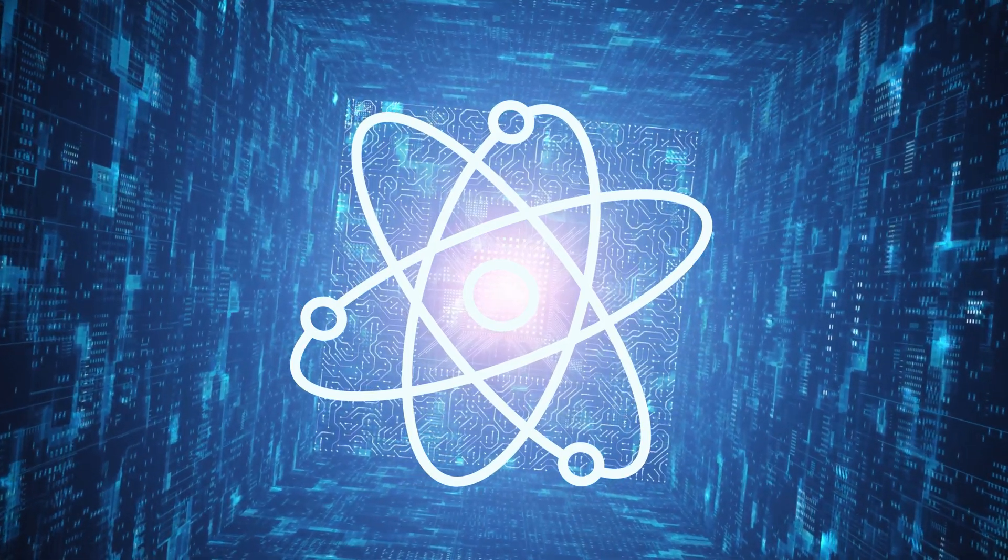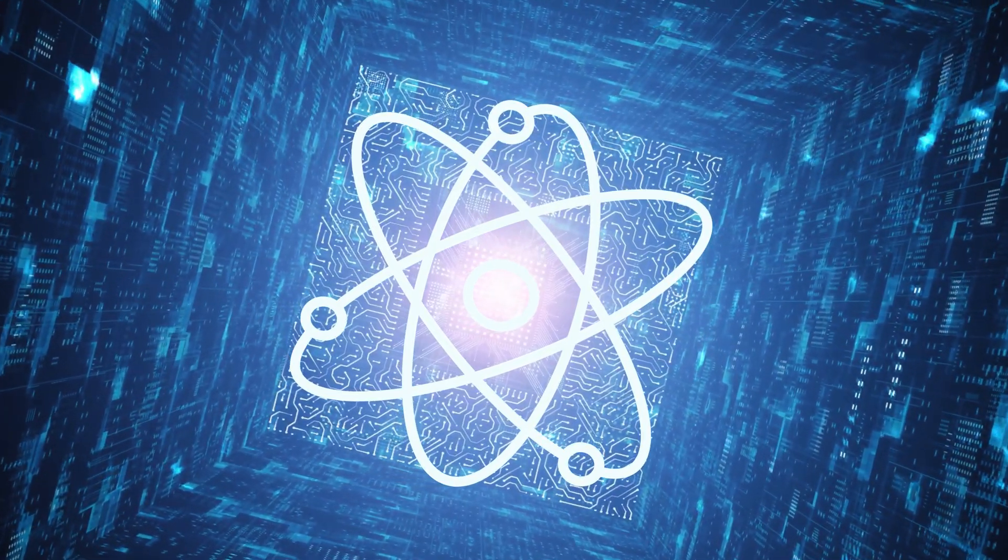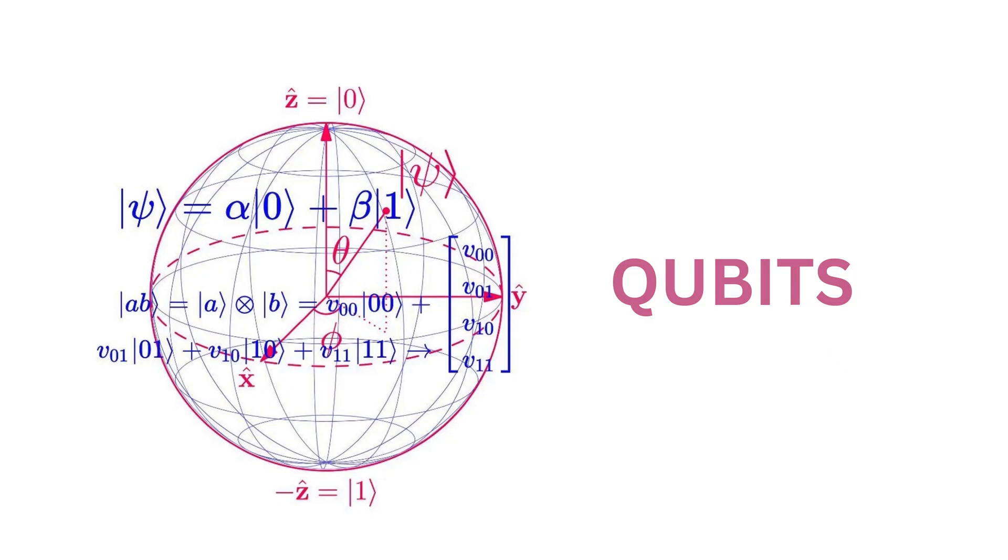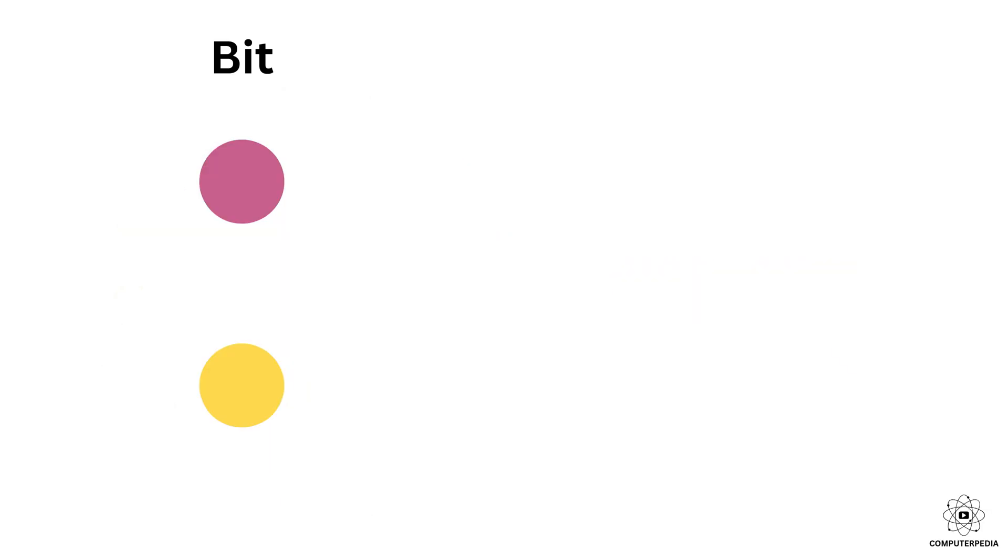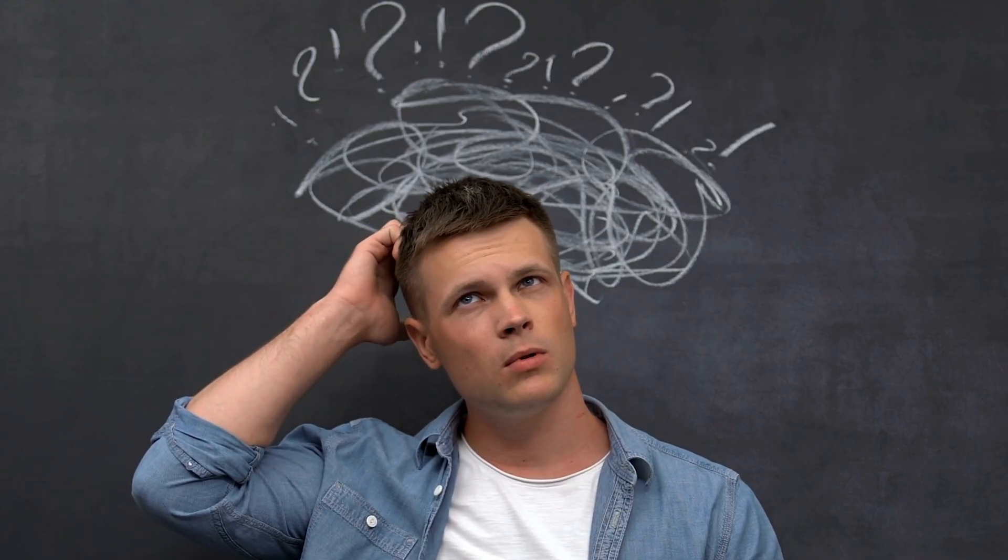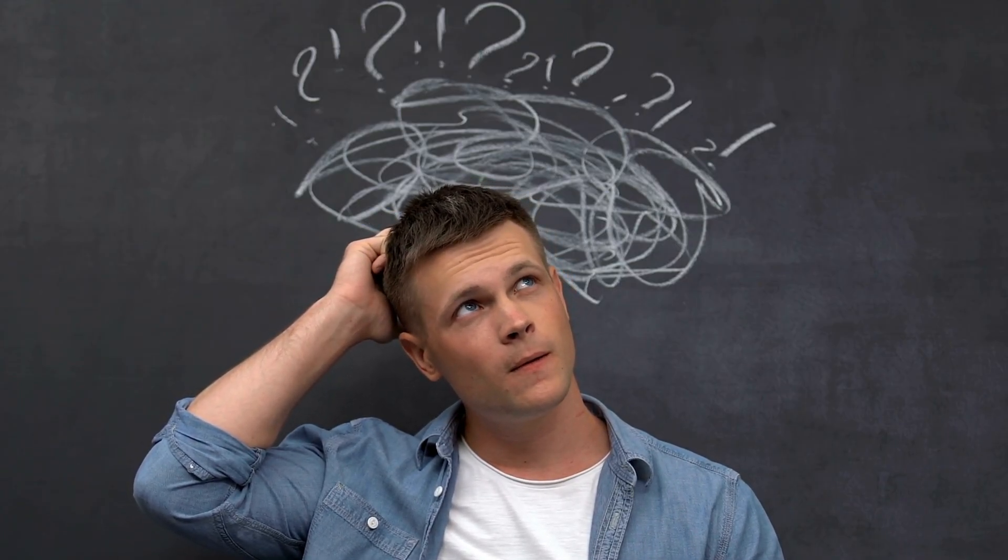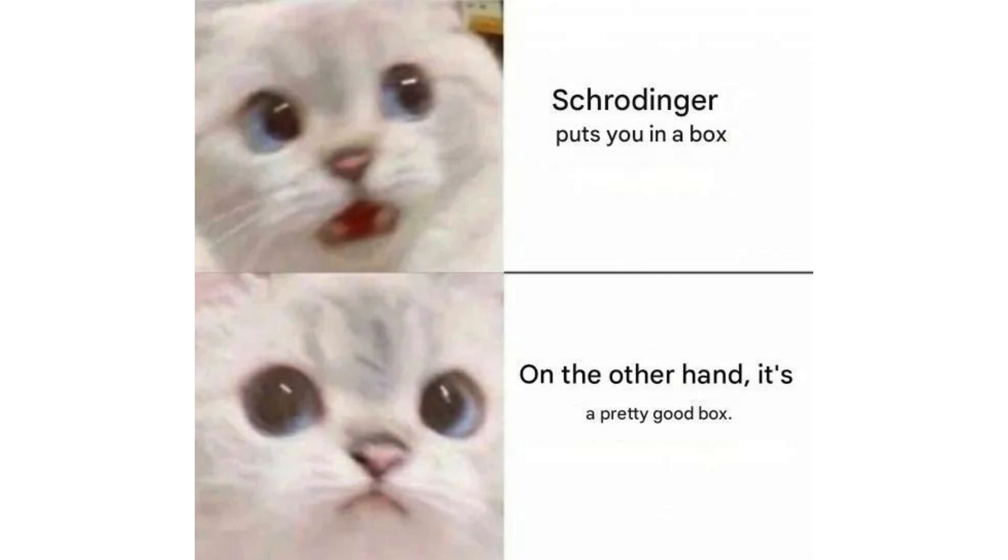Quantum computers take things to a whole new level. Instead of bits, they use something called qubits. Now, we know that a bit can only be either one or zero. But a qubit, thanks to something called superposition, can be one, zero, or both at the same time. Confused? Well, don't worry. I'll explain it without bringing up Schrodinger's cat.